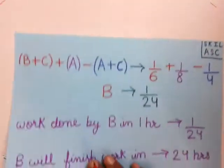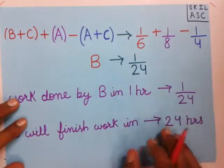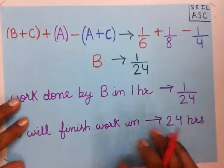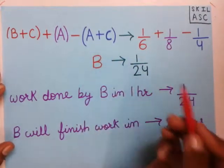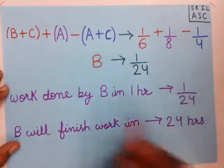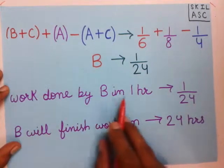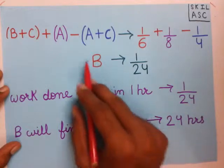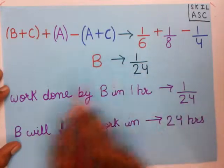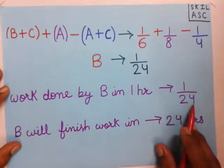We have got the value of B as 1 by 24. We now convert this value into a statement: work done by B in one hour is 1 by 24.